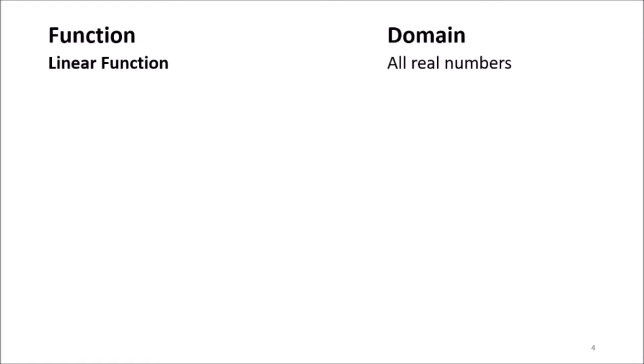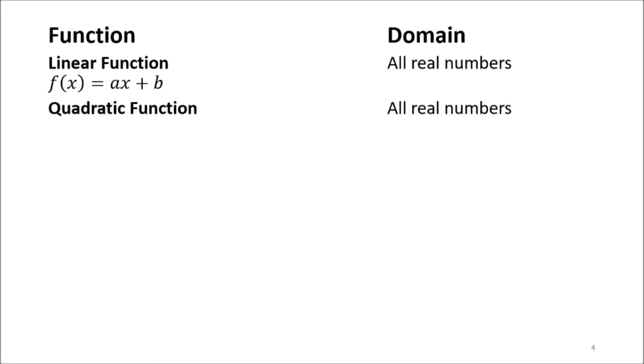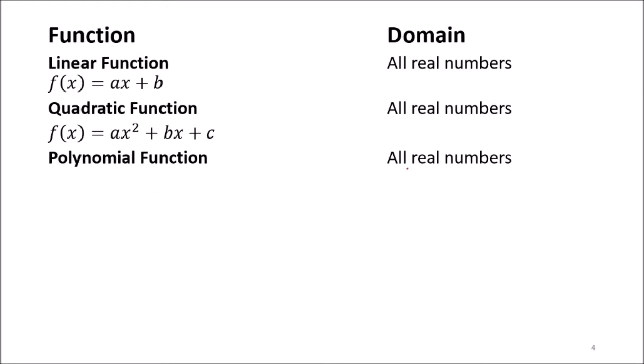Now we'll look at a table of function types and their domains. A linear function of the form f(x) = ax + b has a domain of all real numbers. A quadratic function f(x) = ax² + bx + c also has a domain of all real numbers. A polynomial function f(x) = axⁿ + bxⁿ⁻¹ + ... + k also has a domain of all real numbers.